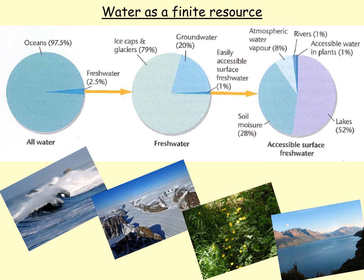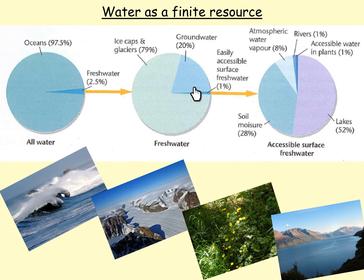When we look at the amount of fresh water we have and take that 2.5%, then 79% of that 2.5% is in ice caps and glaciers, therefore rendering it very difficult to use. 20% is in groundwater — again, a little bit more difficult to use. And this area here, easily accessible surface fresh water, is just 1% of the fresh water on Earth.